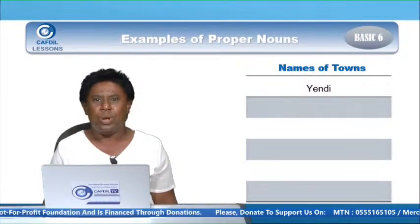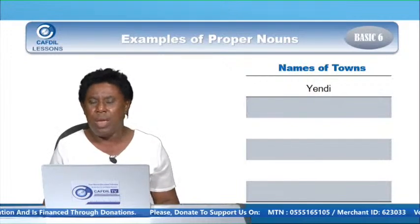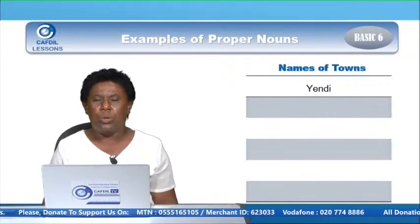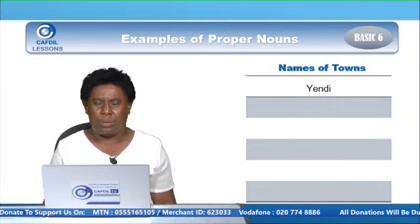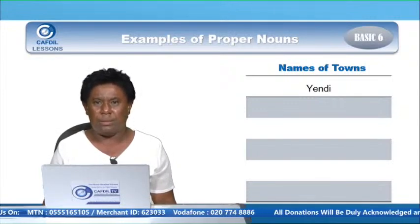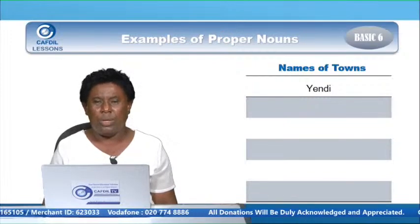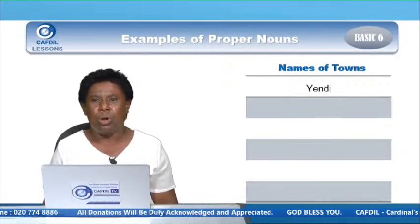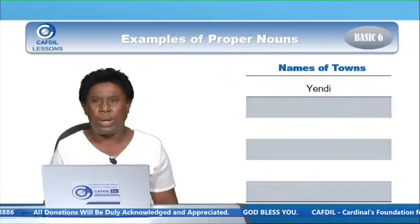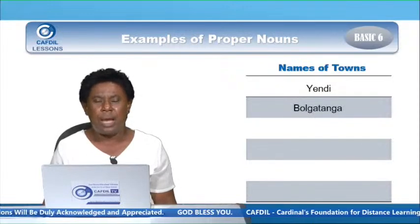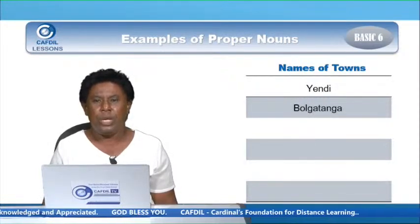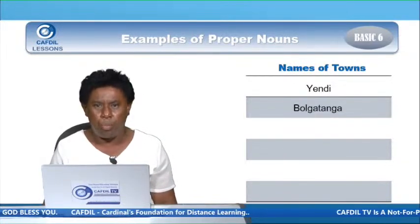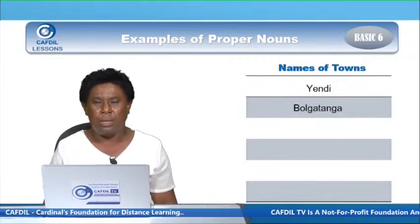Now, all those names we mentioned were names of persons. Now we have examples of names of towns — particular towns. Like Yendi, it's a particular name given to a town and it starts with capital Y, because it's a name of a particular town called Yendi, and it's a proper noun. The next town is Bolgatanga — it begins with capital B, because it's a proper noun.